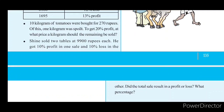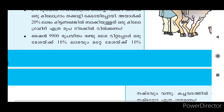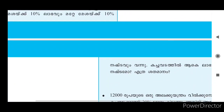He sold two tables at Rs.99 each. He got 10% profit in one sale and 10% loss in the other. Did the total sale result in profit or loss, and what percentage?